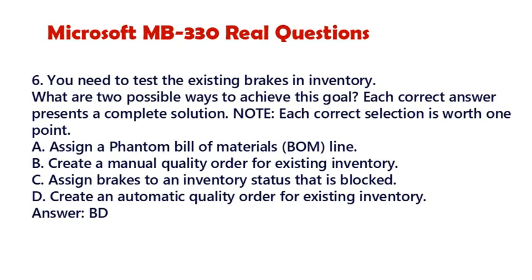Question 6. You need to test the existing breaks in inventory. What are two possible ways to achieve this goal? Each correct answer presents a complete solution. Note: each correct selection is worth one point. A. Assign a phantom bill of materials (BOM) line. B. Create a manual quality order for existing inventory. C. Assign breaks to an inventory status that is blocked. D. Create an automatic quality order for existing inventory. Answer: B, D.